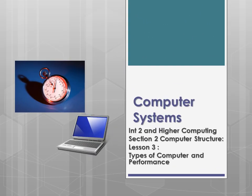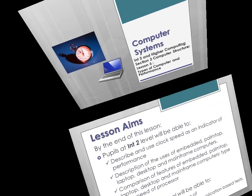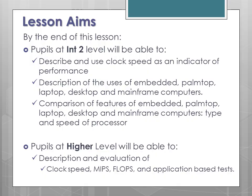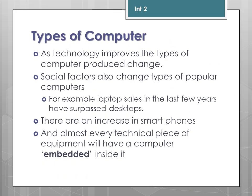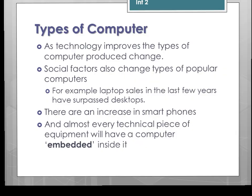Welcome to the last lesson in section 2 of computer structure, which is types of computers. Clock speed is the simplest measure of performance. Now as technology has improved, the type of computers produced has changed.